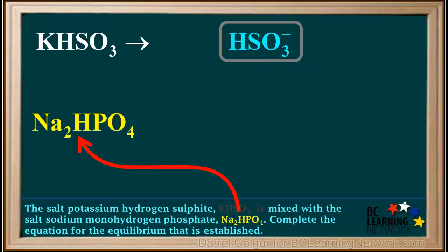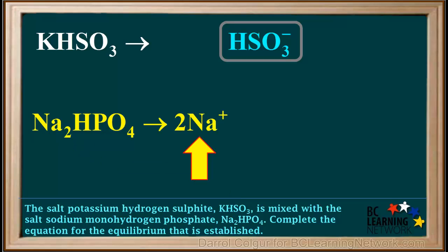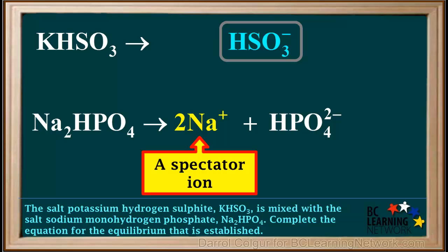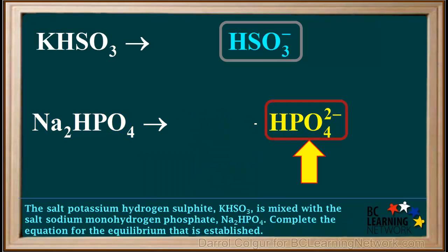Now we take the other salt, Na₂HPO₄, and write its dissociation equation. It dissociates into 2Na⁺ and HPO₄²⁻, the monohydrogen phosphate ion. The Na⁺ ion, another alkali metal cation, is a spectator ion, so we eliminate that, leaving us with only the monohydrogen phosphate ion.